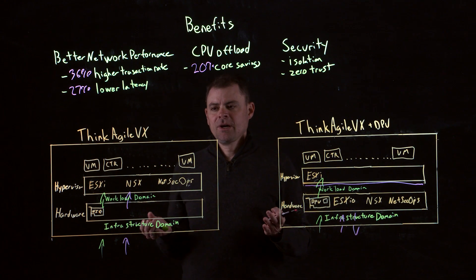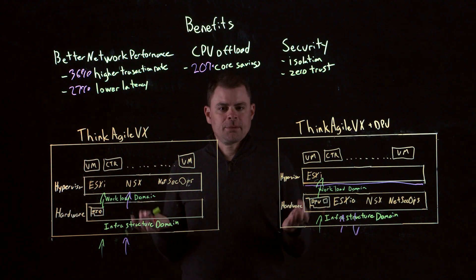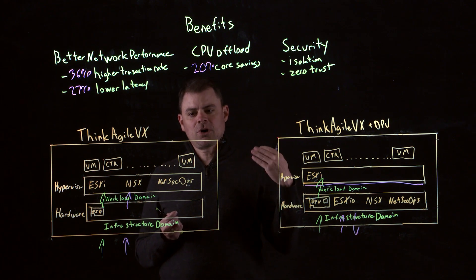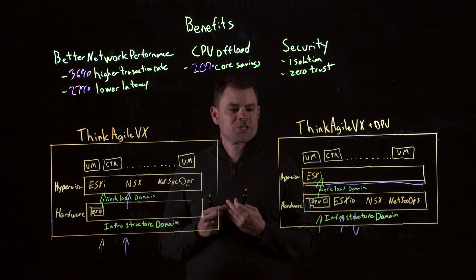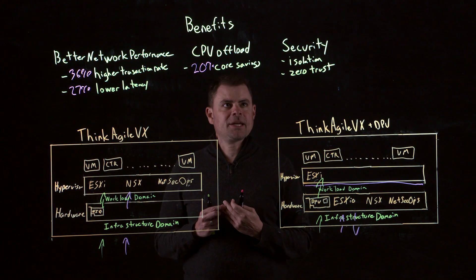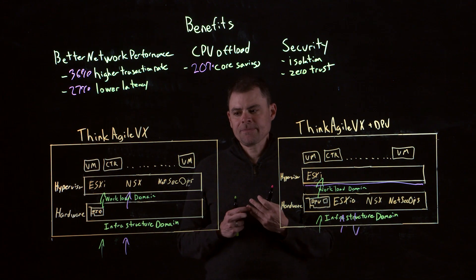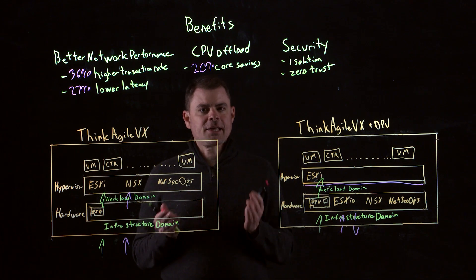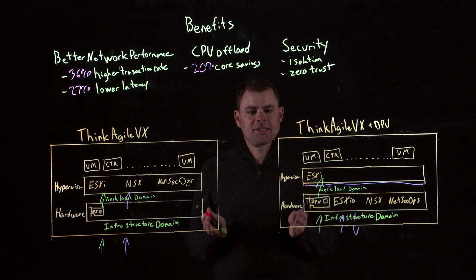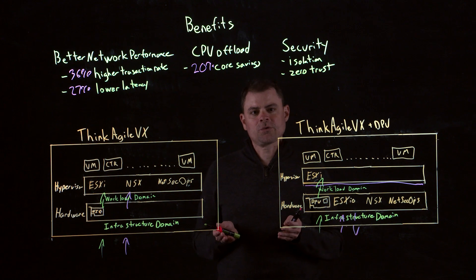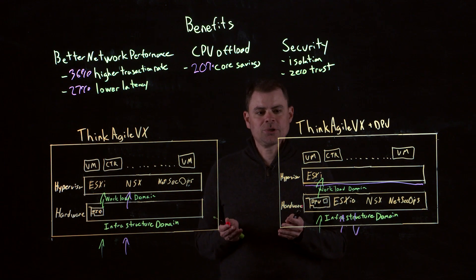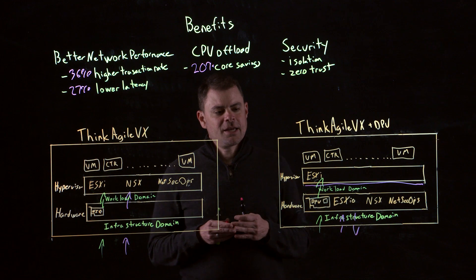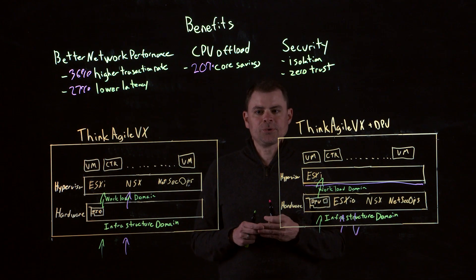To recap, what you're going to gain by using this functionality is better network performance, the ability to offload your CPU and free some of that up, as well as better security. This is going to be available at launch on ThinkAgile VX Intel platforms. If you want more information, just go to Lenovo.com and look for ThinkAgile VX. Thank you for watching, and I hope this is useful.